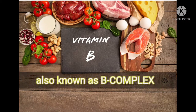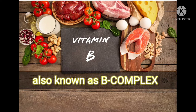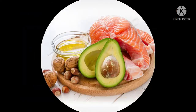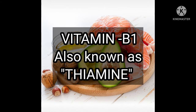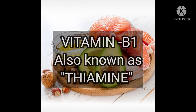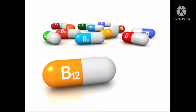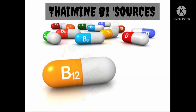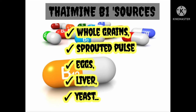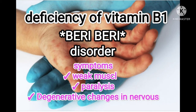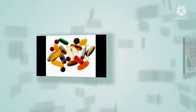Vitamin B is also called B complex. Vitamin B1 is also known as thiamine. Sources of Vitamin B1 include whole grains, sprouted cereals, eggs, liver, and yeast. If a deficiency of Vitamin B1 occurs, it leads to beriberi disorder, with symptoms including weak muscles, paralysis, and degenerative changes in the nervous system.